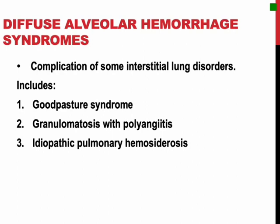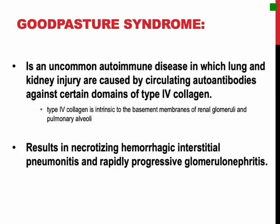Diffuse alveolar hemorrhage syndromes occur as a complication of some interstitial lung disorders. Goodpasture syndrome, idiopathic pulmonary hemosiderosis, and granulomatosis with polyangiitis are considered pulmonary hemorrhage syndromes. Goodpasture syndrome is an uncommon autoimmune disease in which lung and kidney injury are caused by circulating autoantibodies against certain domains of type 4 collagen, which are intrinsic to the basement membranes of the renal glomeruli and pulmonary alveoli. The antibodies trigger destruction and inflammation of the basement membranes, giving rise to necrotizing hemorrhagic interstitial pneumonitis and rapidly progressive glomerulonephritis.